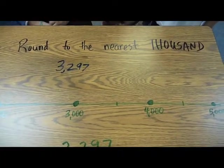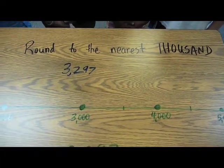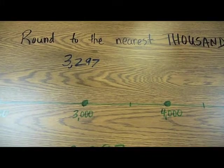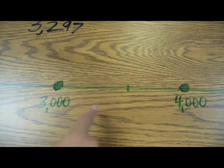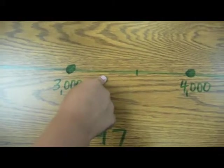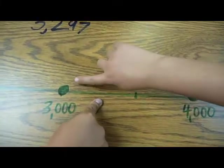We're going to round to the nearest 1,000. Our number today is 3,297. 3,297 is about right there. So it rounds down to 3,000.